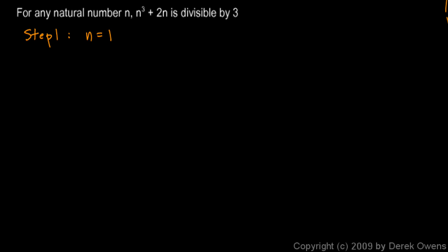So if n equals 1, is n cubed plus 2n divisible by 3? Well, let's see. 1 cubed plus 2 times 1, yeah, that's equal to 1 plus 2, which is 3, which is divisible by 3. So step 1, it works.